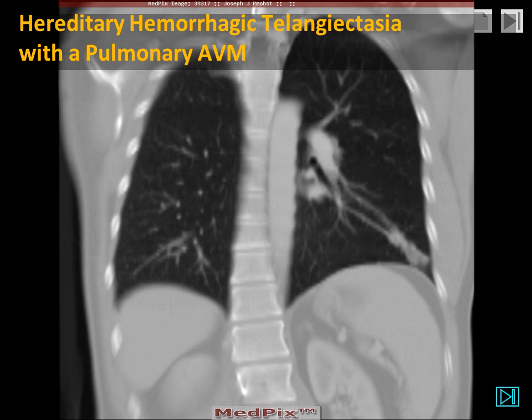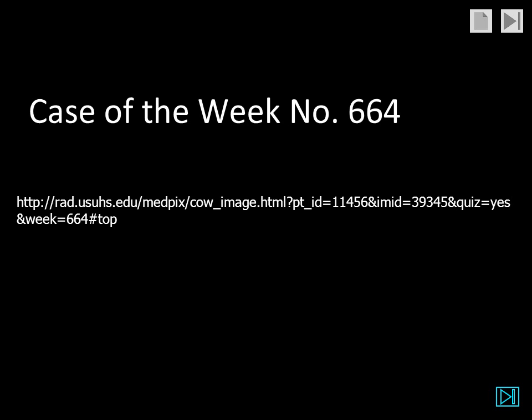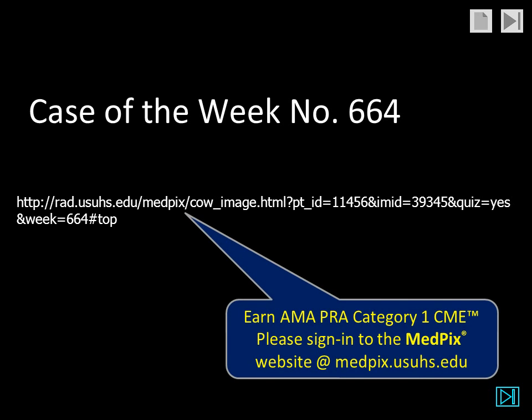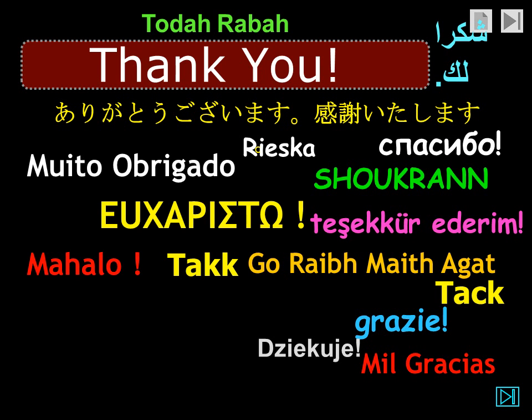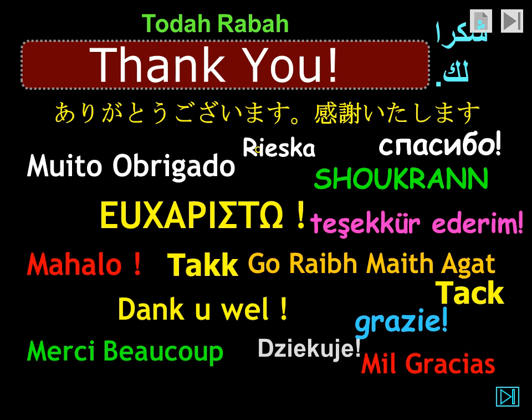This was a case of hereditary hemorrhagic telangiectasia with a pulmonary arteriovenous malformation. As a reminder, you can earn CME credit by visiting the MedPix Case of the Week; this was week number 664. Thank you very much for your attention. I'm Jim Smyrniatopoulos, and I have approved this message.